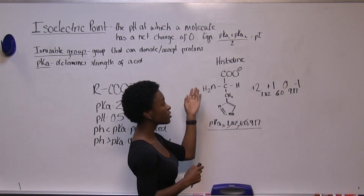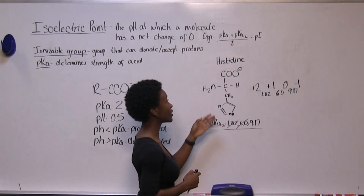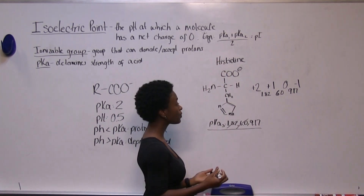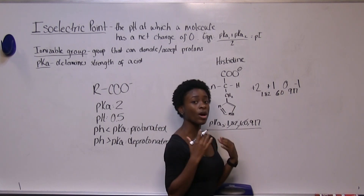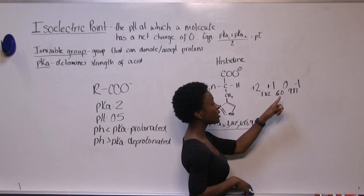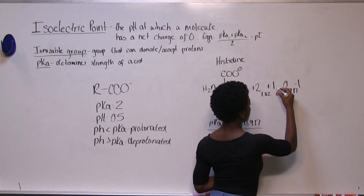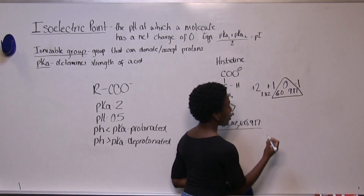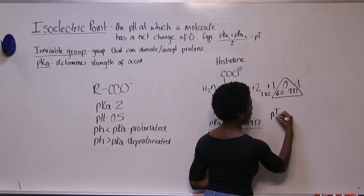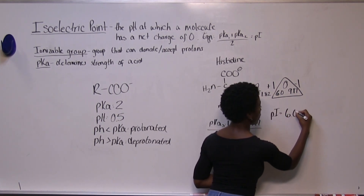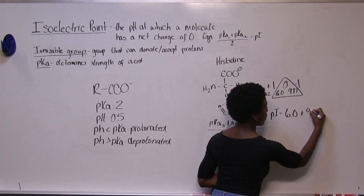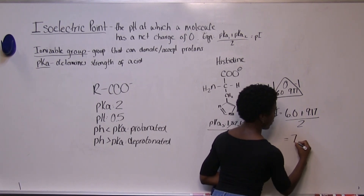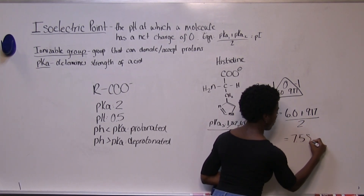The equation for finding the isoelectric point is pKa1 plus pKa2 divided by two, and the pKa values we look at are the ones directly before and after our zero charge. So our pI is going to be equal to 6 plus 9.17 divided by two, which gives us 7.58.